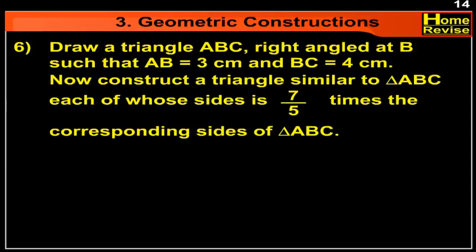Draw a triangle ABC right angled at B such that AB is equal to 3 cm and BC is equal to 4 cm. Construct a triangle similar to triangle ABC each of whose sides is 7 upon 5 times the corresponding side of triangle ABC.